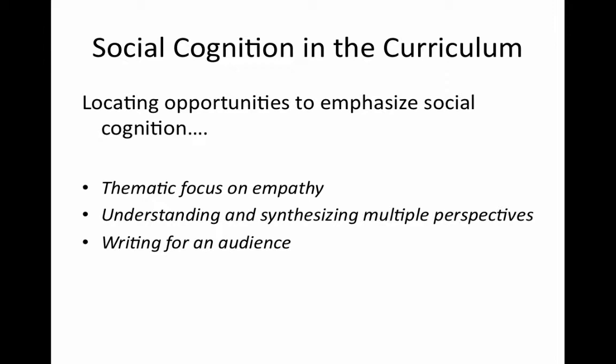Another example of a curricular opportunity to address social cognition lies in the topic of writing for an audience. As students work to meet the standards for writing that include addressing audiences, teachers can help students identify the potential opinions, feelings, and perspectives of their intended audience, then identify the particular areas, ideas, and points to raise that their audiences will find compelling. Often, drawing out the connections between the curriculum and social cognition involves very little change to the curriculum itself. The main shift is an emphasis of the curriculum and the discussions teachers have with students around the existing topics and associated learning tasks.